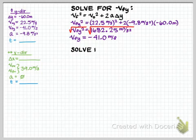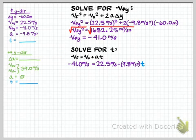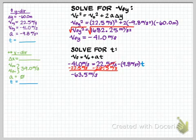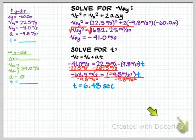Now we can find time in the y direction using a simpler formula — no quadratic needed. Using v_final = v_initial + acceleration times time: negative 41 equals 22.5 plus negative 9.8 times time. Subtracting 22.5 from both sides gives negative 63.5 equals negative 9.8 times time. Dividing both sides by negative 9.8, the time the cannonball is in the air from launch until it hits the ground is 6.48 seconds.